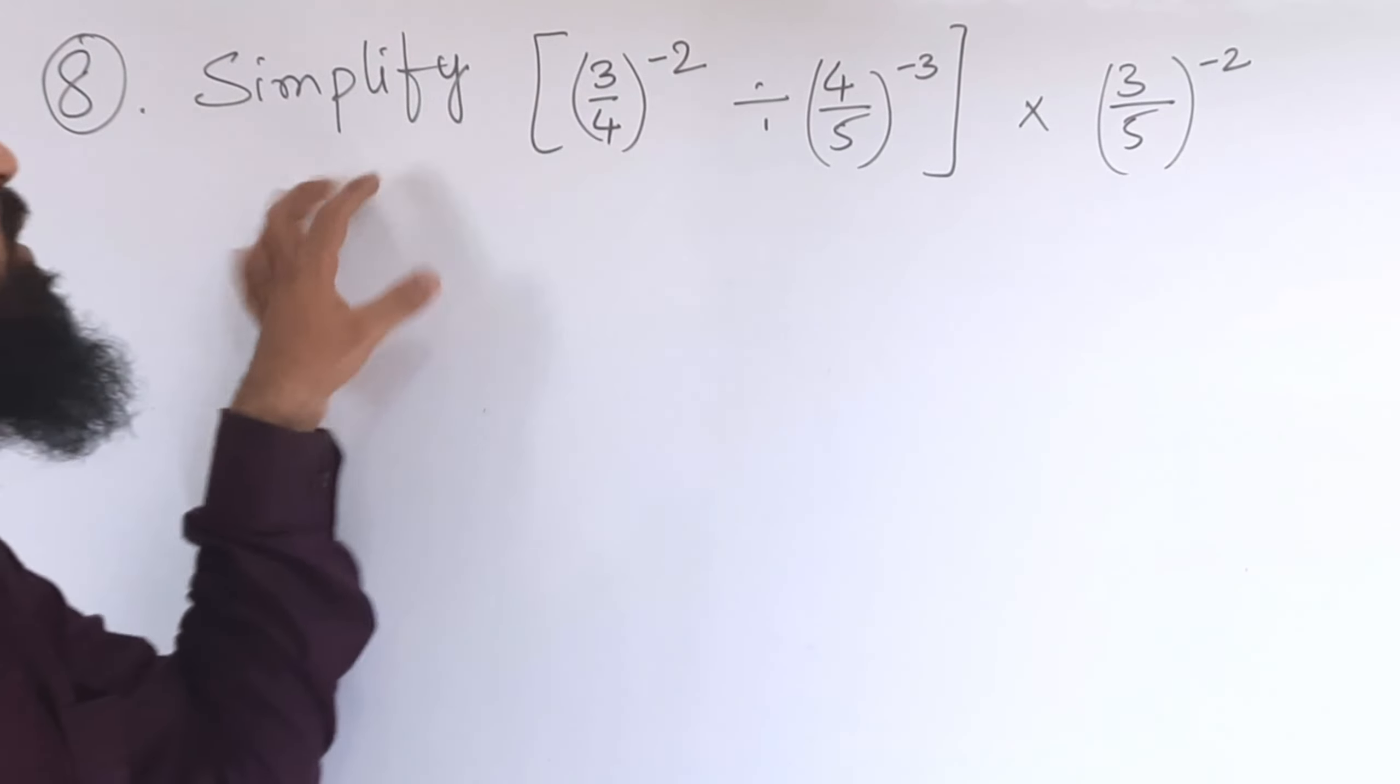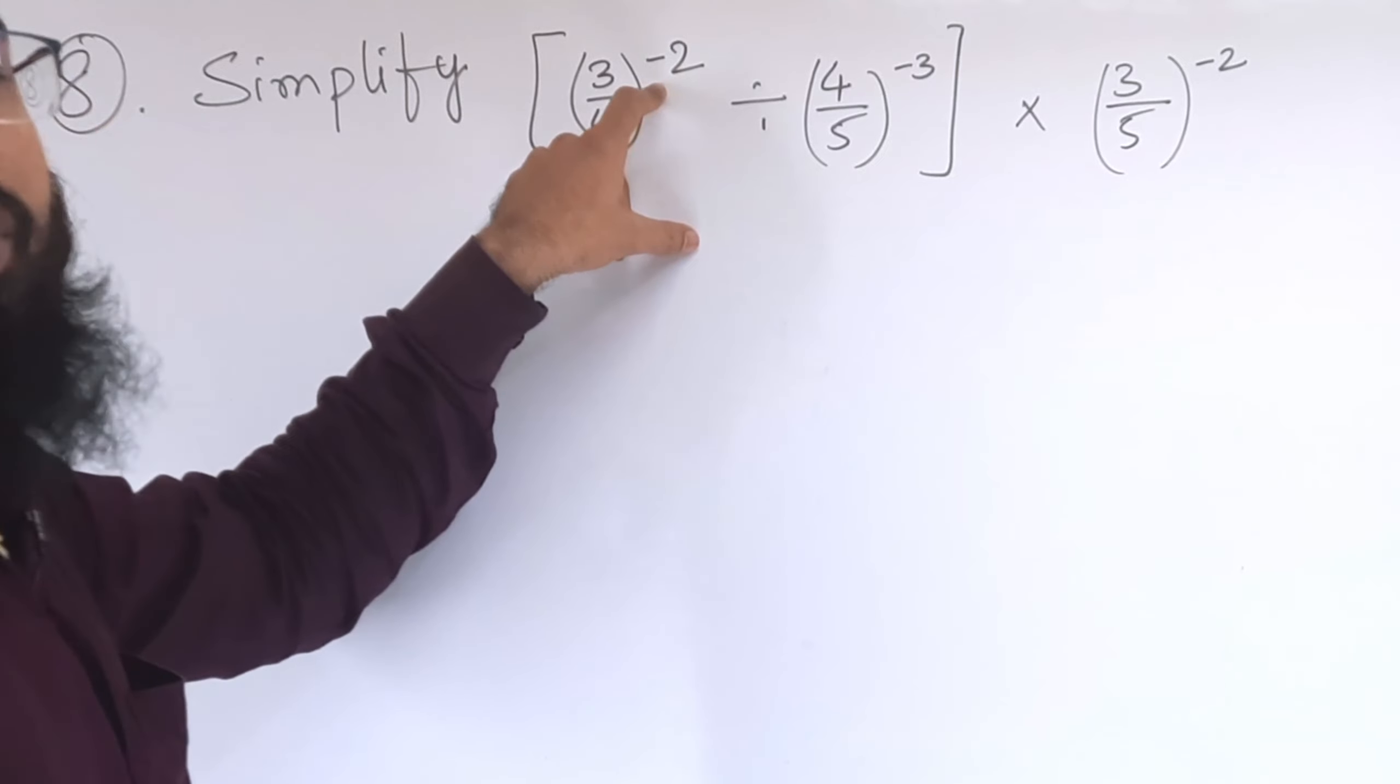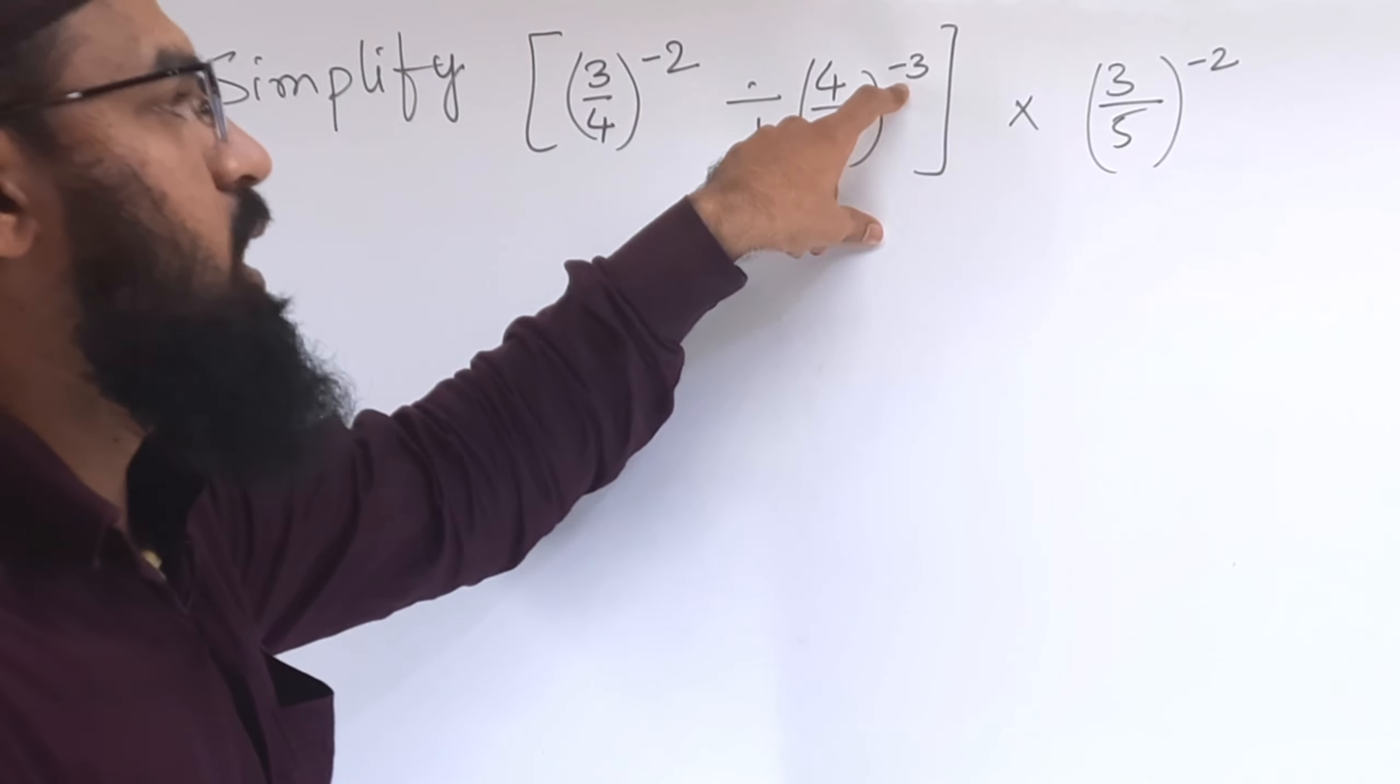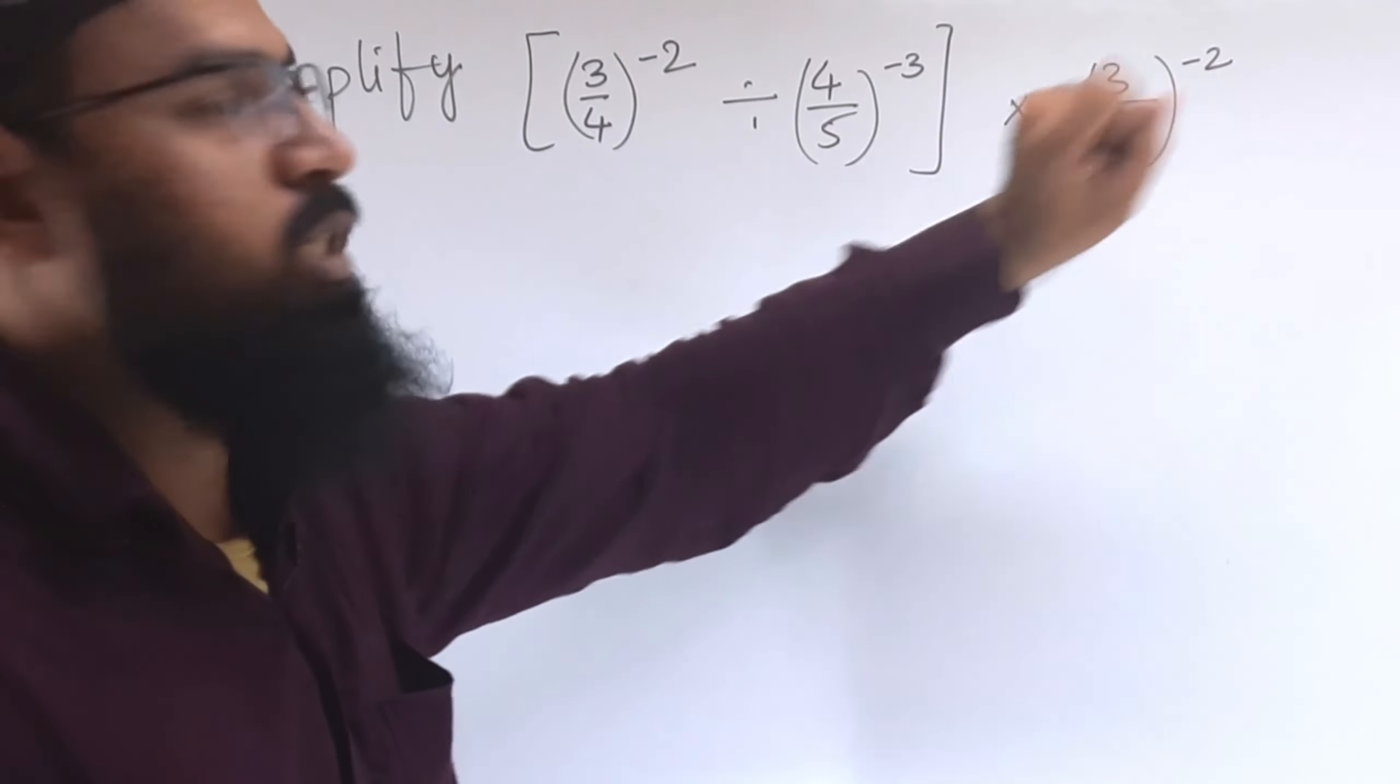8th problem: simplify (3/4)^(-2) divided by (4/5)^(-3) into (3/5)^(-2).